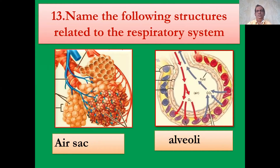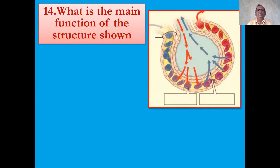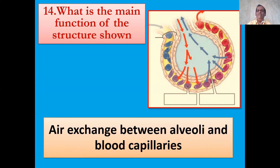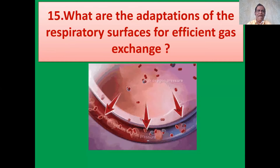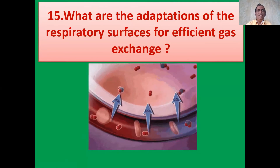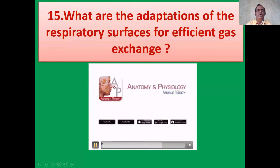What is the main function of the structure shown? You know this is labeled as alveoli. The function is air exchange between alveoli and blood capillaries. In this diagram, you can see clearly the blood vessel — the blood vessel also has single cell thickness. The alveoli has single cell thickness — very, very thin surface. So air exchange takes place between the alveoli and the blood capillaries.